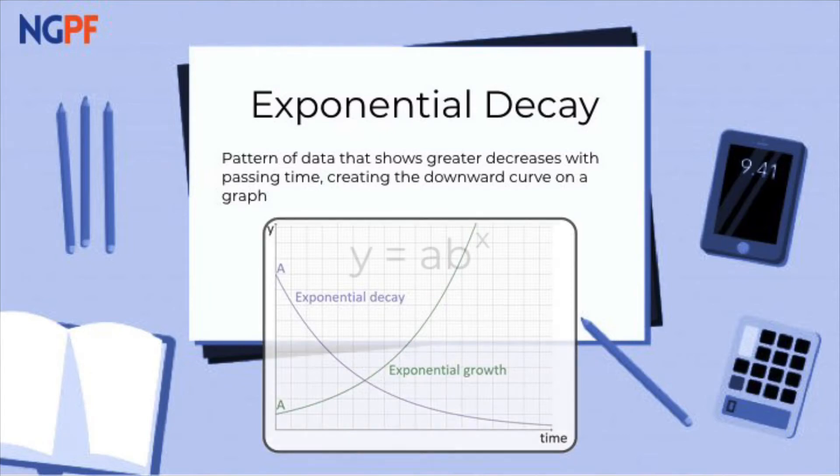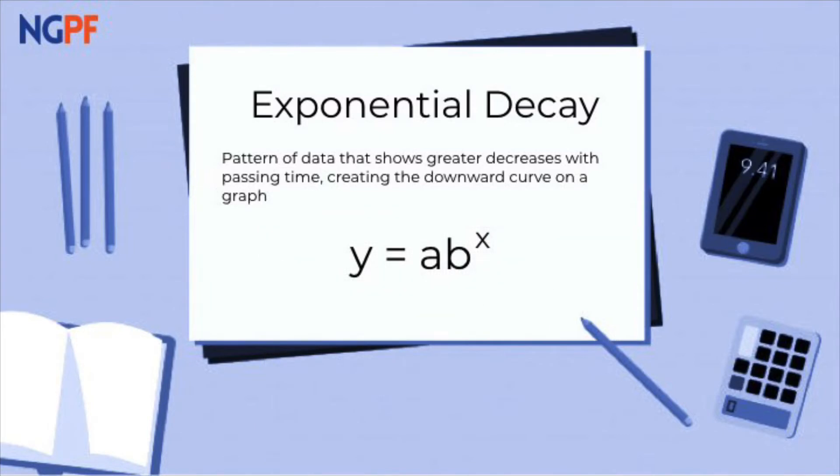The formula for exponential decay is the same as exponential growth, but instead of a growth factor, we will use a decay factor. So we have y equals a times b to the x power, where y is the total, a is the initial and principal amount, b tells us the rate at which something is decaying, and the exponent of x tells us for how many years.